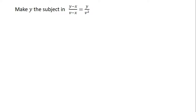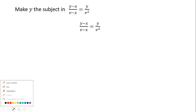The question is: make y the subject in (y minus x) divided by (v minus x) is equal to y over v squared. So we are supposed to make y the subject in this equation. Once again, our equation is (y minus x) divided by (v minus x) is equal to y over v squared.